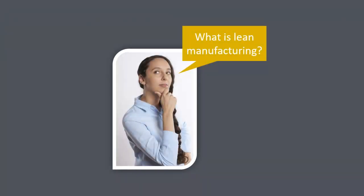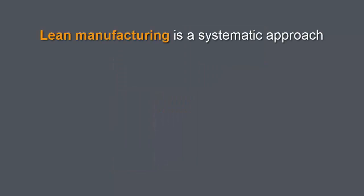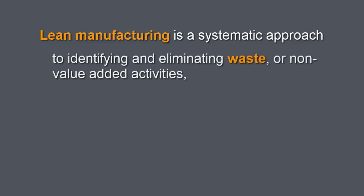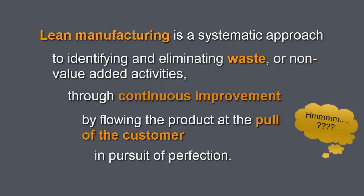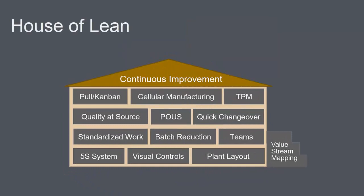So exactly how do we define lean manufacturing? Multiple definitions of lean exist, but we'll focus on this one: lean manufacturing is a systematic approach to identifying and eliminating waste, or non-value-added activities, through continuous improvement by flowing the product at the pull of the customer in pursuit of perfection. If this definition doesn't make complete sense right now, don't worry — by the end of the day, you'll see how it all fits together. Lean manufacturing involves techniques and practices like those listed here in the House of Lean. We'll talk about all of these techniques today.